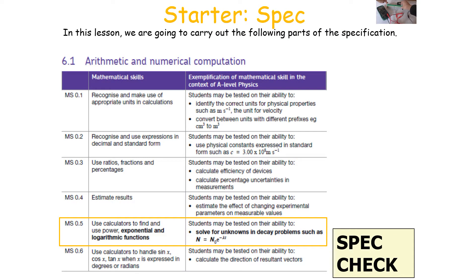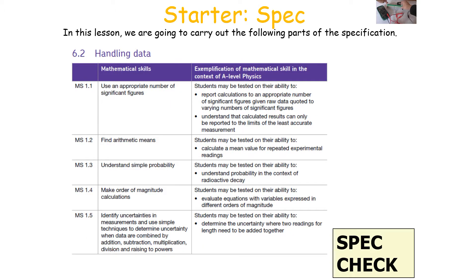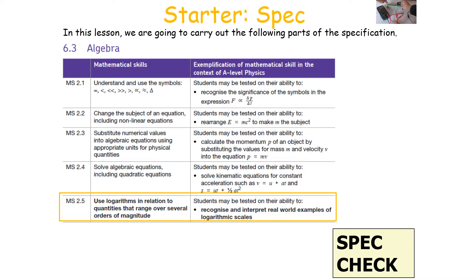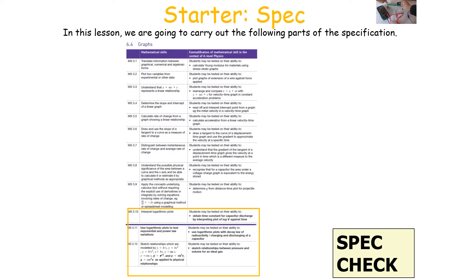In this lesson we're going to be looking at the following parts of the AQA A-level physics specification: how we can use exponential and logarithmic functions in particular equations, using logarithms in relation to quantities that range over several orders of magnitude, interpreting logarithmic plots, using logarithmic plots to test exponential and power law variations, and how to sketch those relationships with linked logarithmic terms.